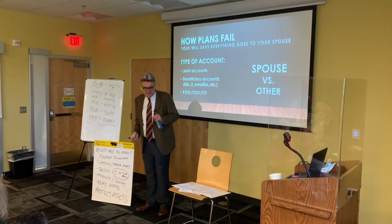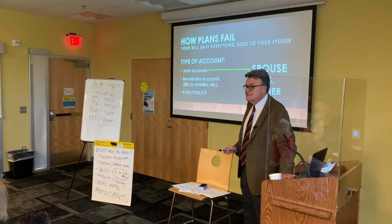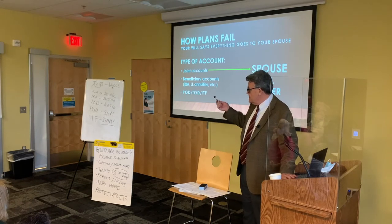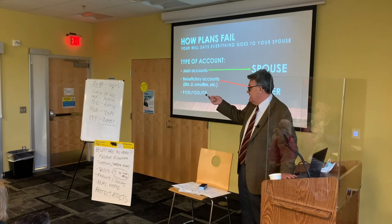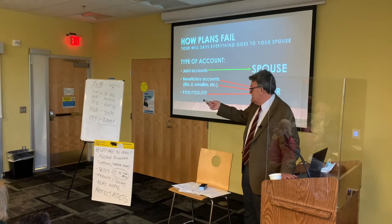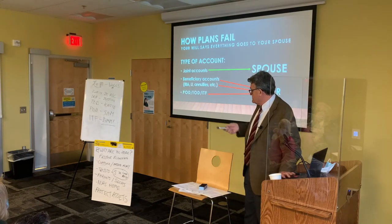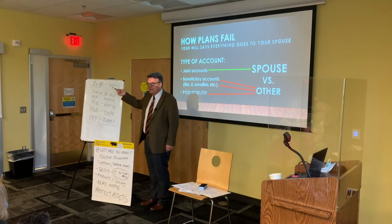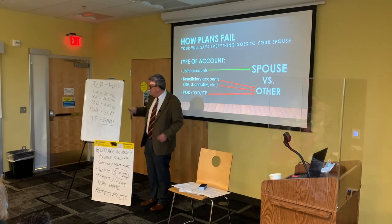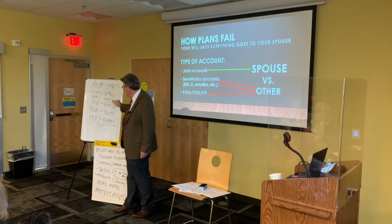But remember — the will said everything goes to Agnes. Let's see what happens in reality. The joint account goes to Agnes because it's a joint account. The IRA goes to Justin. The TOD goes to Katie. The POD payable on death account goes to Sam. And the ITF in trust for account went to Jimmy, their nephew. But wait — the will said everything was supposed to go to Agnes.